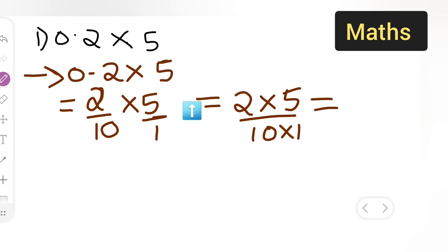Which is equal to 2 times 5. Your answer will be 10 upon 10. You can directly cancel this, so basically your answer will be 1.